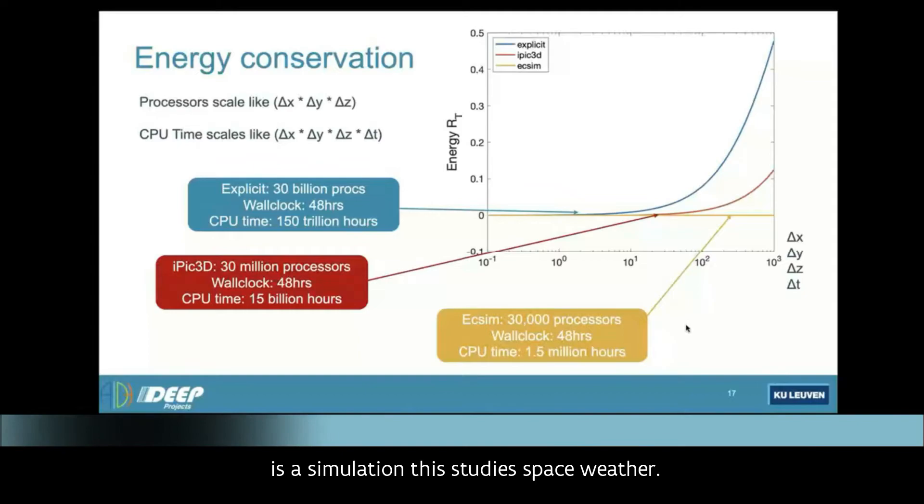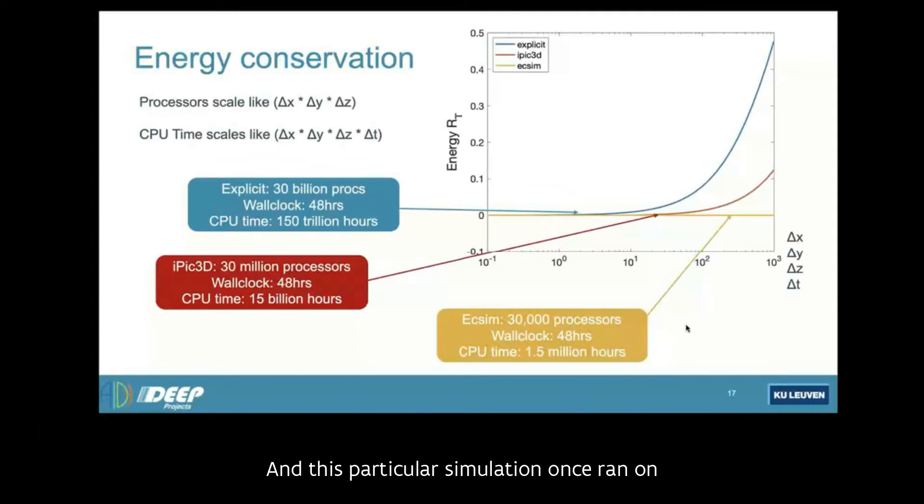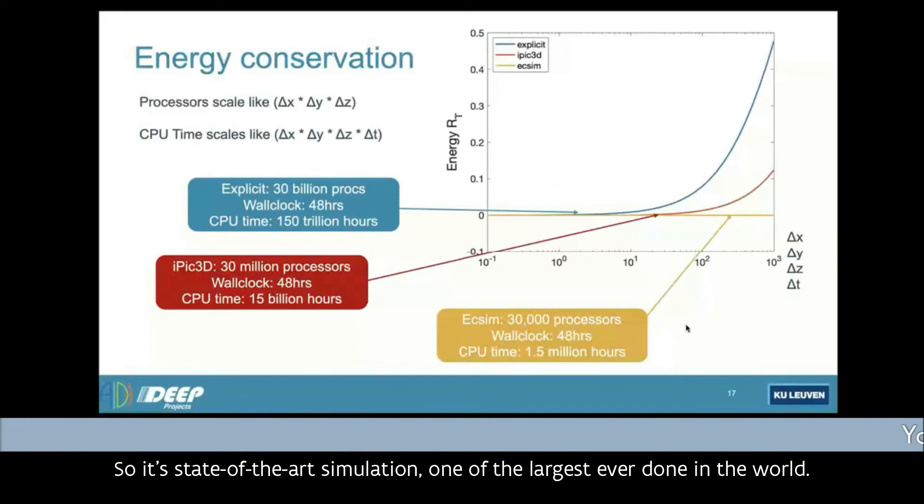Give you an example of one simulation that I'm going to show next. It's a simulation that studies space weather. This particular simulation was run on SuperMUC, and it took 30,000 processors for 48 hours. It corresponds to about 1.5 million CPU hours. And it gave us results. We published them in a Nature paper. We published them in Astrophysical Journal. So it's state-of-the-art simulation, one of the largest ever done in the world.